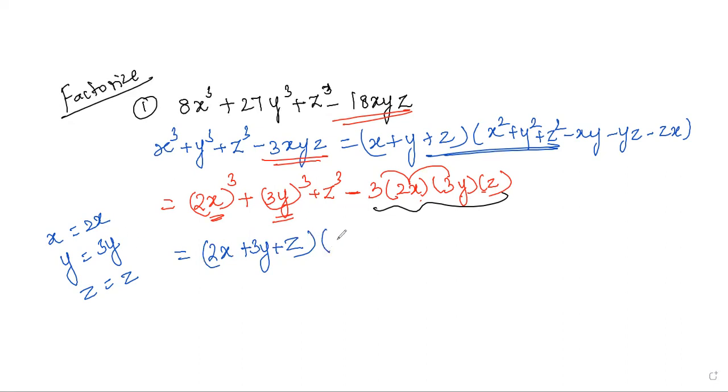And then x square is 2x whole square, so 4x square. Y square is 3y whole square, so 9y square. Z square is z square. Minus x into y: multiply 2 and 3, that's 6, so 6xy. Minus y into z: 3y times z is 3yz. Minus z into x: z times 2x is 2zx. These are the factors.